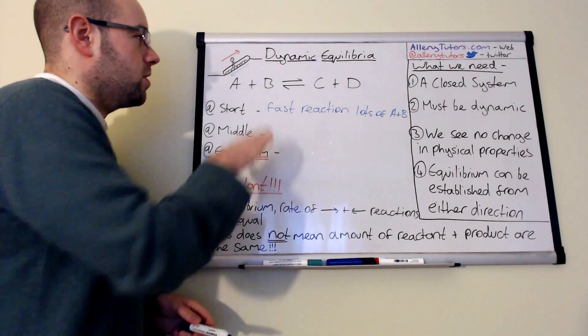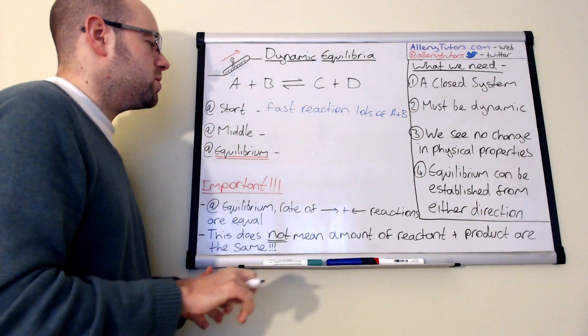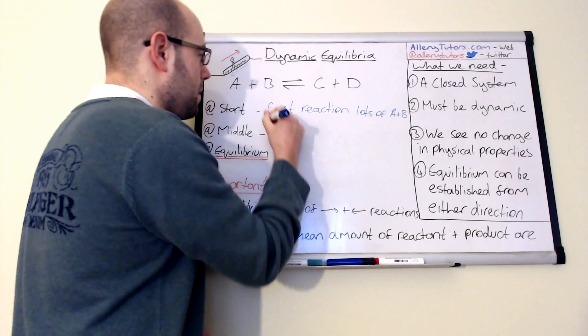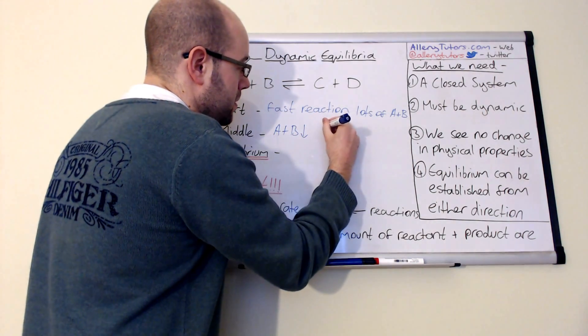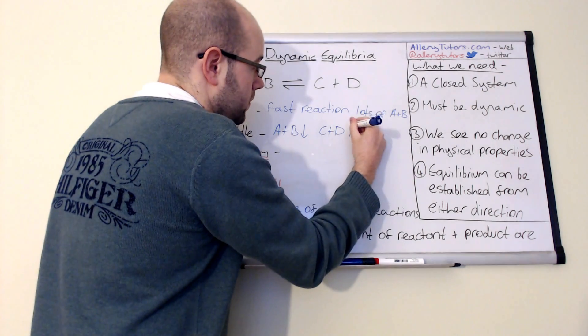In the middle, so effectively as the reaction proceeds, what we start to get is the amount of A and B will effectively start to decrease, but the amount of C and D will effectively increase.